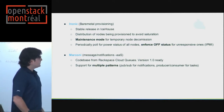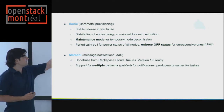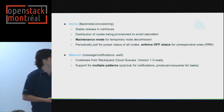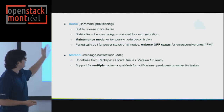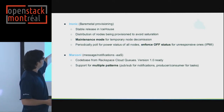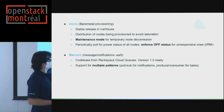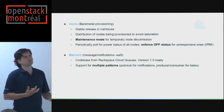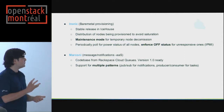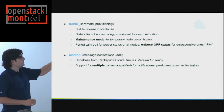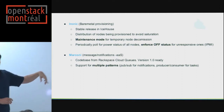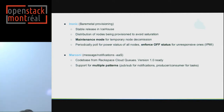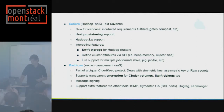Marconi — done by Rackspace and sold commercially as CloudQueues — matches Amazon Simple Queue Service. It's a message notification as a service, offering pub/sub producer-consumer patterns. It's a good practice for developers to use messaging, and this is the OpenStack implementation.